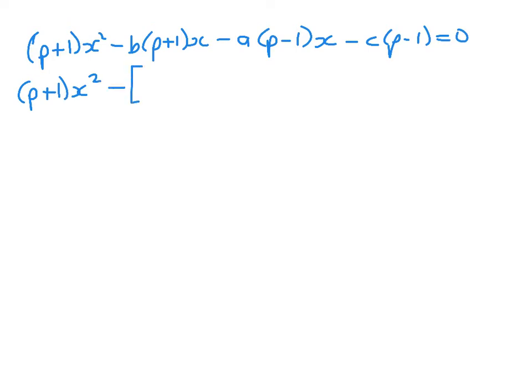We've got p plus 1 x squared minus b times p plus 1 x. Now I'm going to subtract those two terms from both sides of the equation. That'll give me minus a times p minus 1 x minus c times p minus 1, and that equals 0. Now we'll collect up like terms. So we have p plus 1 x squared minus the bracket b times p plus 1 plus a times p minus 1 times x minus c times p minus 1 equals 0.